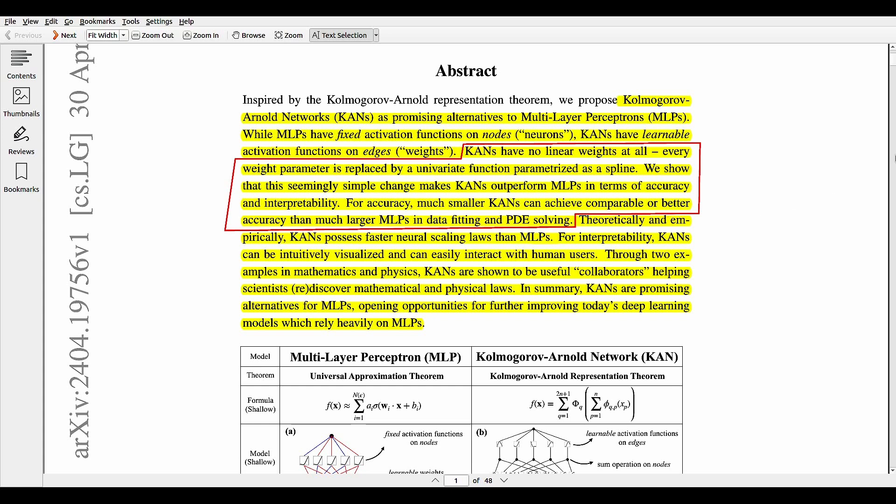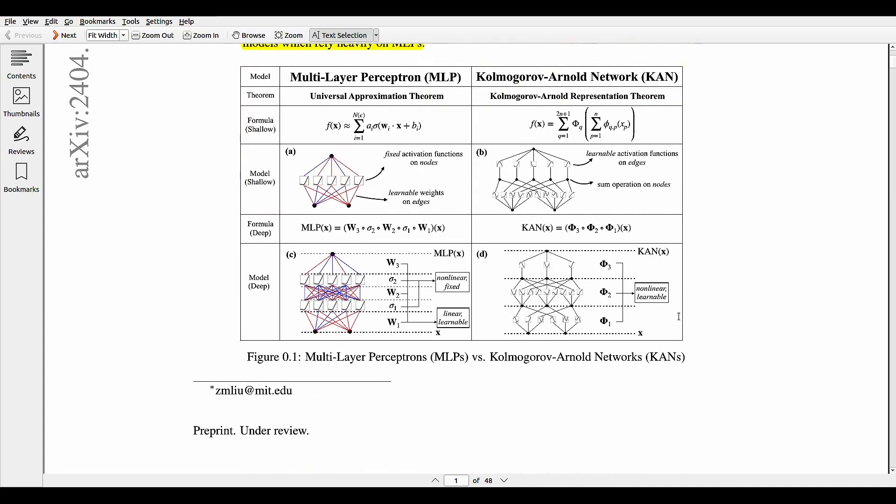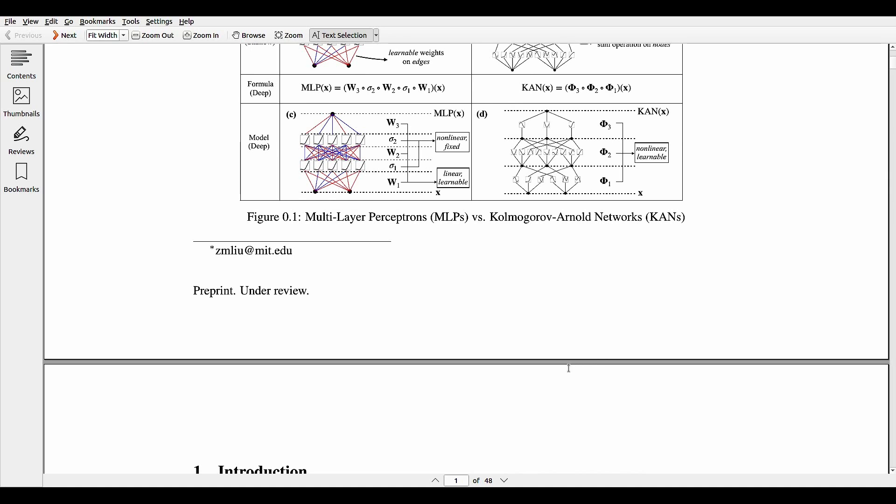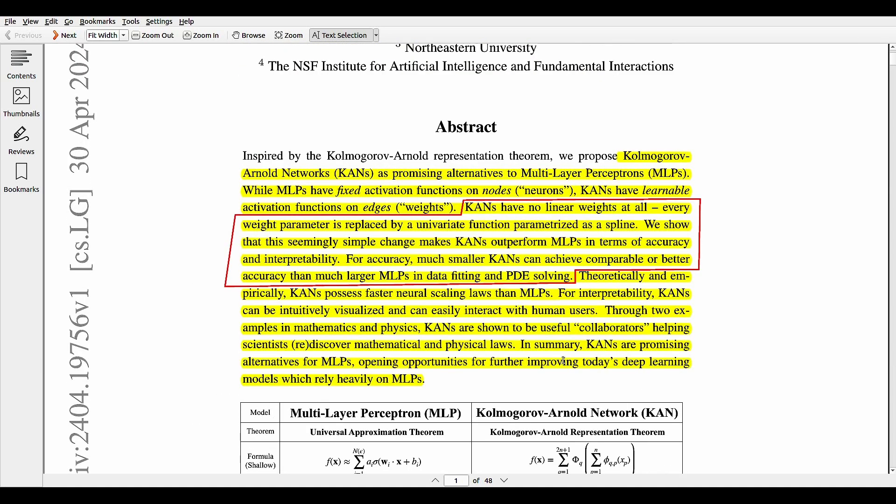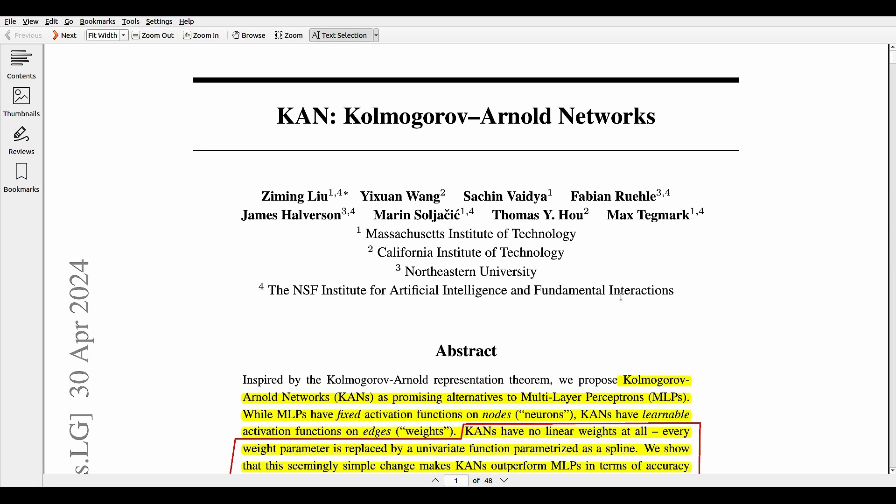The key technique proposed in this paper is that while MLPs place activation functions on neurons, can we instead place learnable activation functions on weights? And the answer is yes we can. That's the whole concept of this paper, which is moving activation functions from nodes, that is neurons, to edges, that is weights.